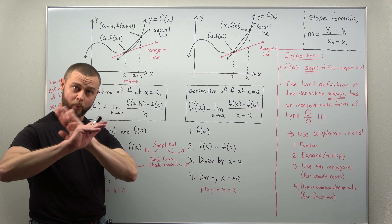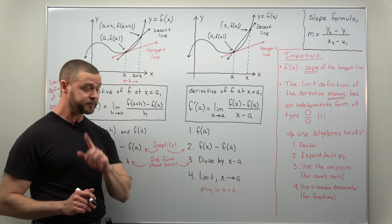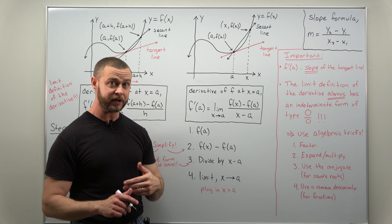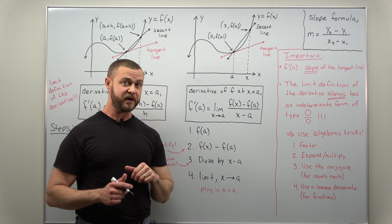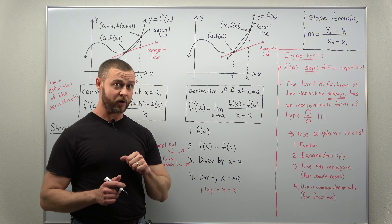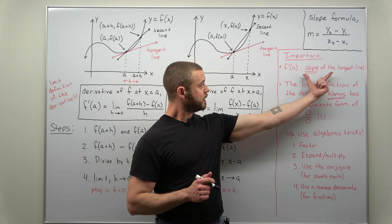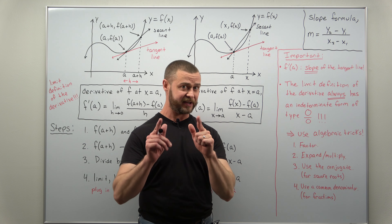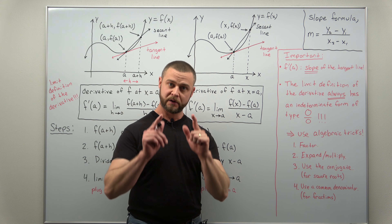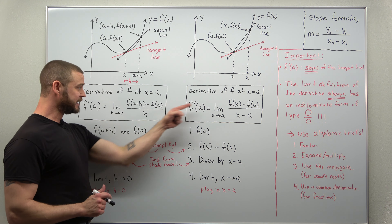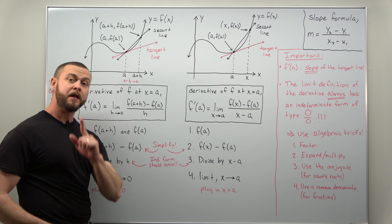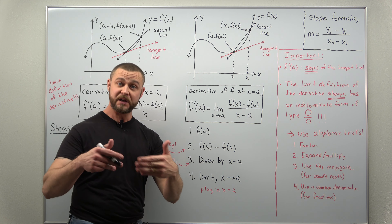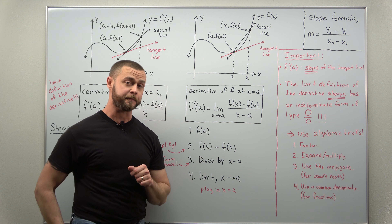Let's go over some basics. f prime of a — the derivative of a function at an x-coordinate a — represents the slope of a tangent line. So what you should get at the end of calculating these is a number, since slope is represented by a number.